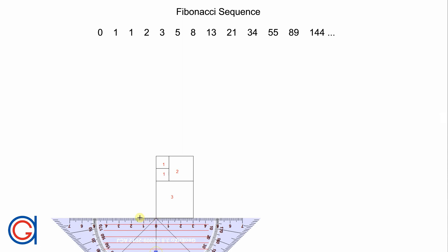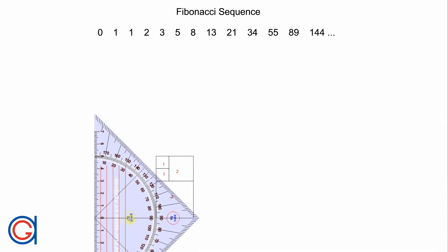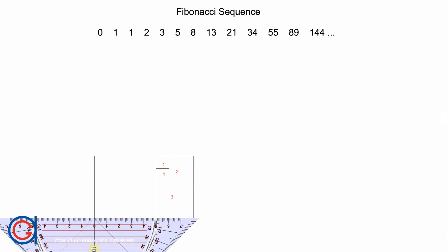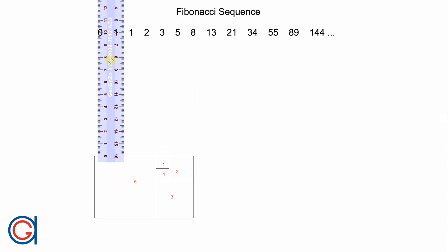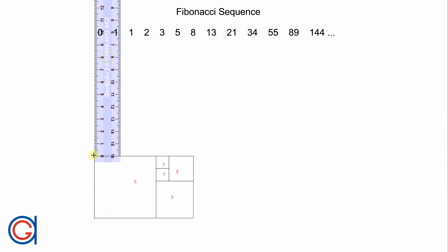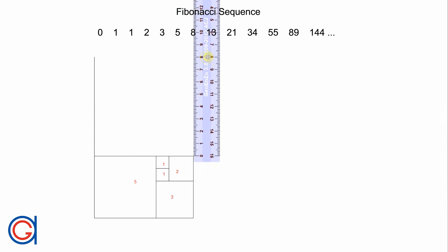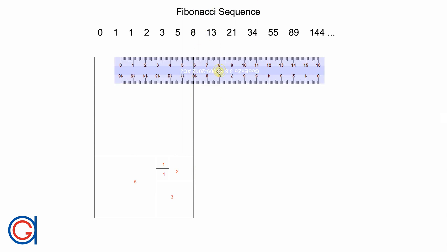And now we will continue on the left side this time. Three plus two is five, so we will draw a line five centimeters to the left, and five centimeters vertically upwards, and we will complete the square. The next pair of numbers in the sequence is five plus three, which is eight, so we will continue going up. We draw a vertical line eight centimeters, and then join it to complete our eight centimeter square.